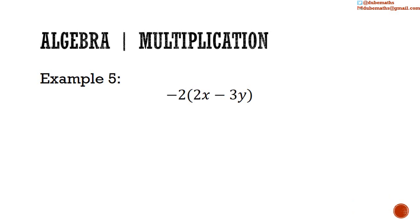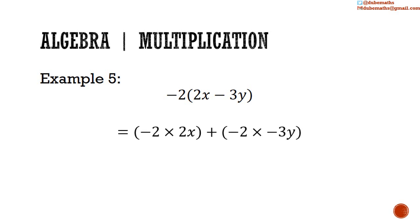The final example: negative 2 multiplied by (2x minus 3y). This is the same as negative 2 multiplied by 2x added to negative 2 multiplied by negative 3y. Negative 2 multiplied by 2x equals negative 4x. Negative 2 multiplied by negative 3y: 2 multiplied by 3y is 6y, and a negative by a negative is positive, so positive 6y. The result is negative 4x plus 6y.